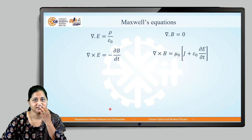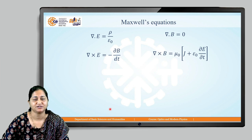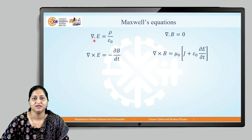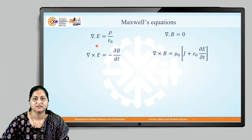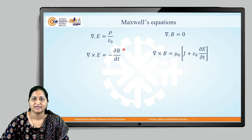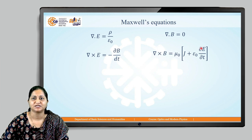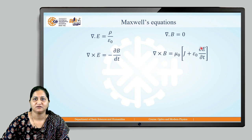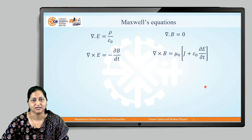Let's state all four Maxwell's equations. First: del dot E equals rho by epsilon naught. Second: del dot B equals zero. Third: del cross E equals minus dou B by dou t. Fourth: del cross B equals mu naught J plus epsilon naught dou E by dou t. These are the general equations.